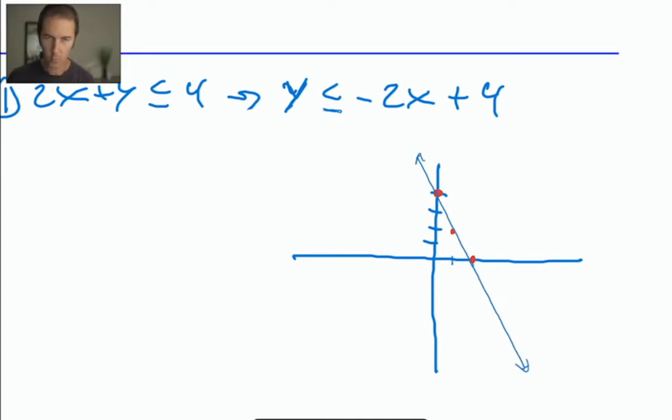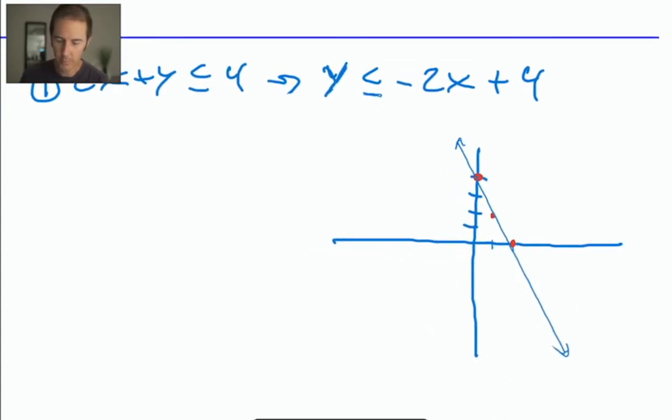So that's phase one of graphing a solution to a linear inequality, because we have to get the line part of it. And we have to make sure that it's either solid or dashed, whichever one is appropriate for the inequality. Maybe thinking about this or equal to symbol as its own solid line can be a reminder that you're supposed to be drawing your line as a solid line.